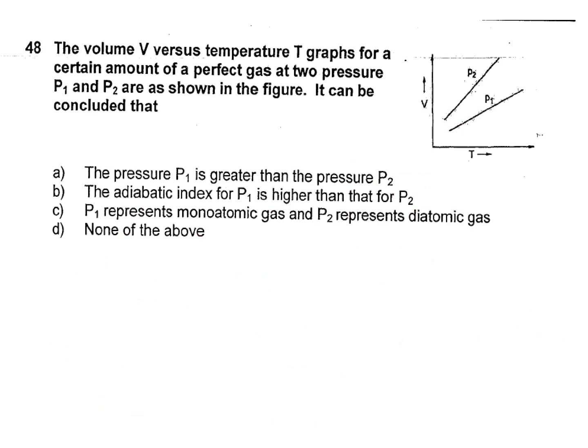The volume V versus temperature T graphs for a certain amount of a perfect gas at two pressures P1 and P2 are shown in the figure. It can be concluded from the volume versus temperature graph at pressures P1 and P2 that the pressure P1 is greater than the pressure P2. This is our answer.